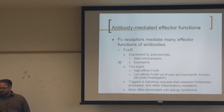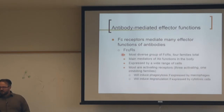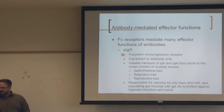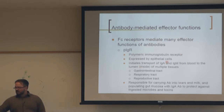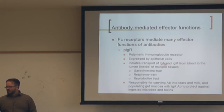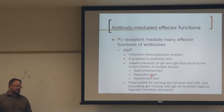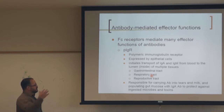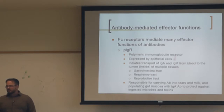You need to know FC gamma receptor differences — particularly the difference between FC gamma receptor 1 and 2. Polymeric immunoglobulin receptors (pIgR) are expressed by epithelial cells and transport IgA and IgM from the blood into the lumen of tissues and the gastrointestinal tract. These are the effectors responsible for localizing IgA onto epithelial surfaces and into secretions.